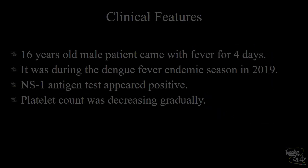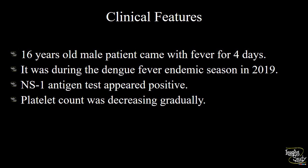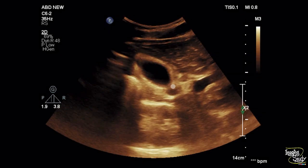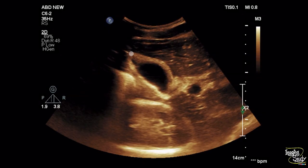Let's start with the first case. A 16-year-old male patient came with fever for four days. It was during the dengue fever endemic season in Dhaka in 2019. The patient had the NS1 antigen test positive and platelet count was decreasing gradually. Here you can see the gallbladder wall is thickened and edematous.